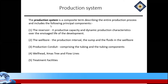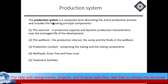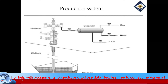First, let's look at the production system. There's a basic technology we use in the production system. The production system is a composite term which describes five different areas at the oil or gas field. Number one is the oil reservoir or gas reservoir — in general, we say the reservoir. Second is the wellbore. Third is the production conduit, which is the tubing or completion diagrams. Fourth is the production surface equipment: the wellhead, christmas tree, flow lines, and so on. Fifth is the treatment facility.